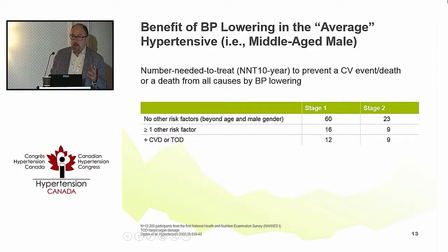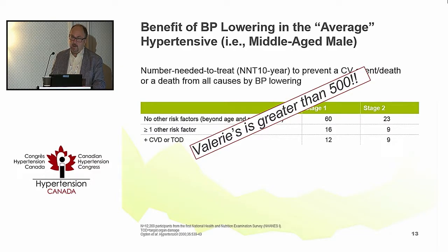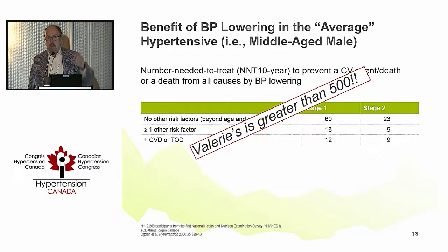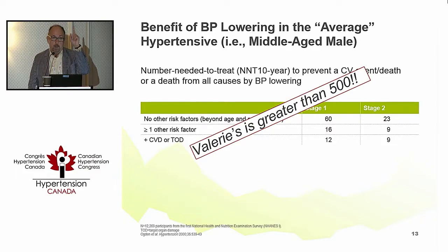The greater the global cardiovascular risk, the more the benefit for lowering blood pressure — proven by the SPRINT study. But what is the NNT for Valerie? Her number is more than 500. You would need to treat more than 500 people like Valerie for 10 years to avoid 1 MI, and you're probably going to harm about 100 people — not very much, but perhaps 5 to 10 more significantly — for avoiding that 1 MI.